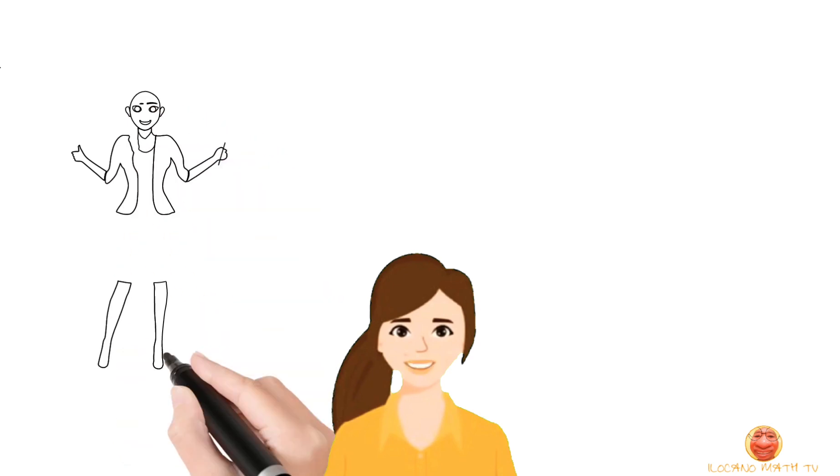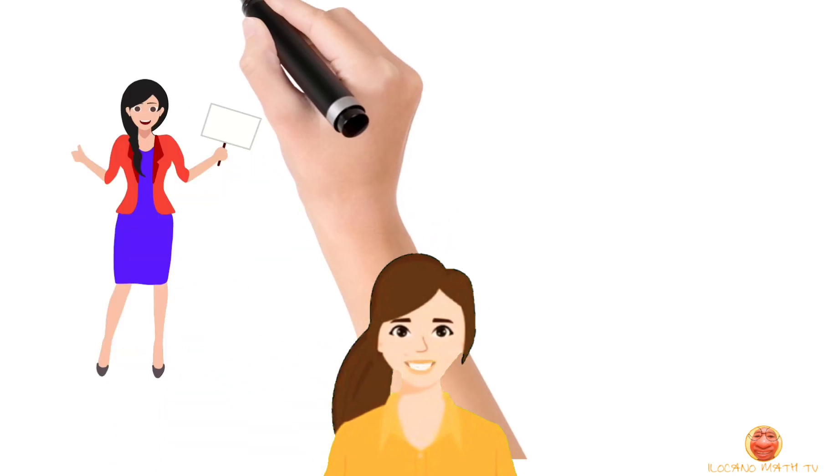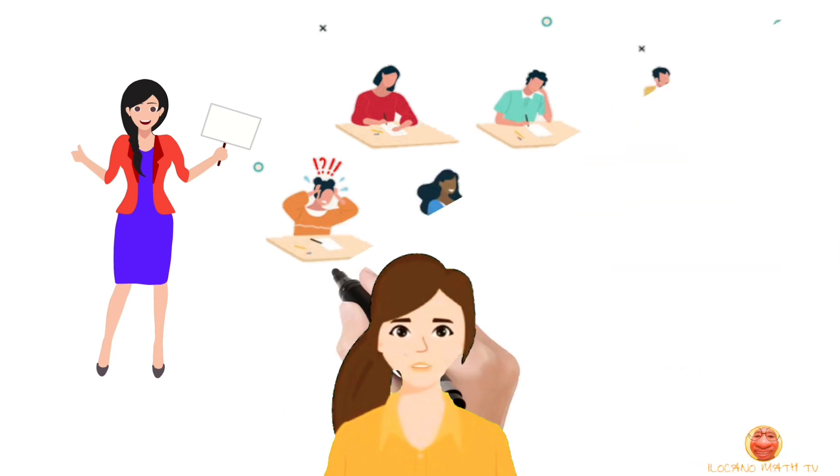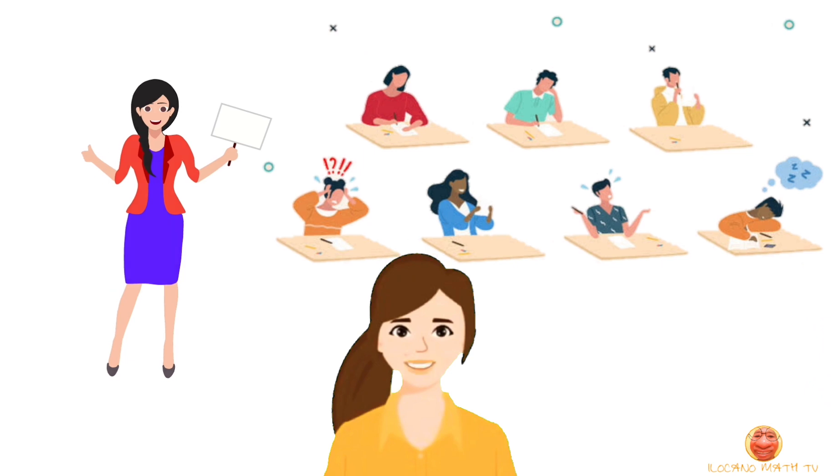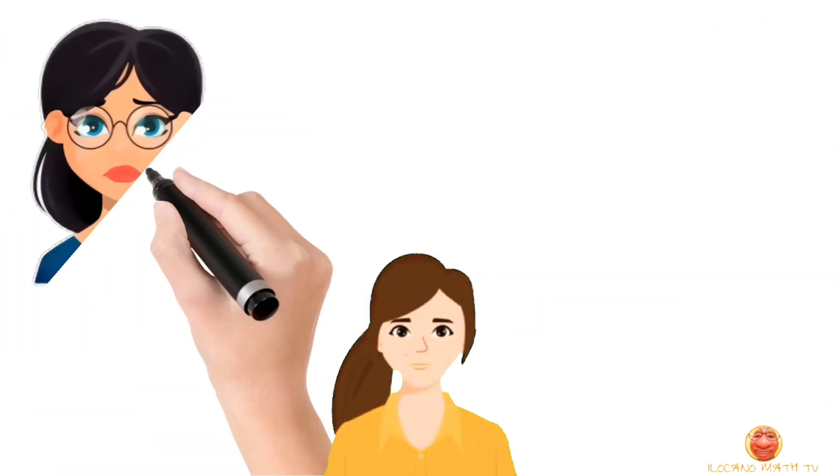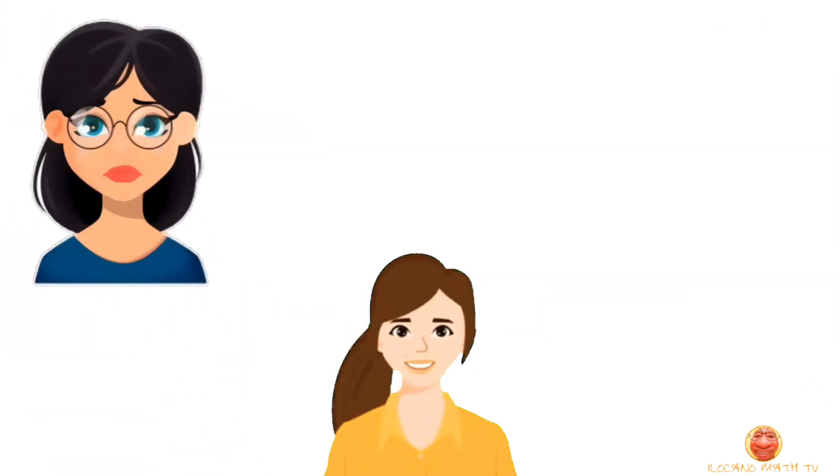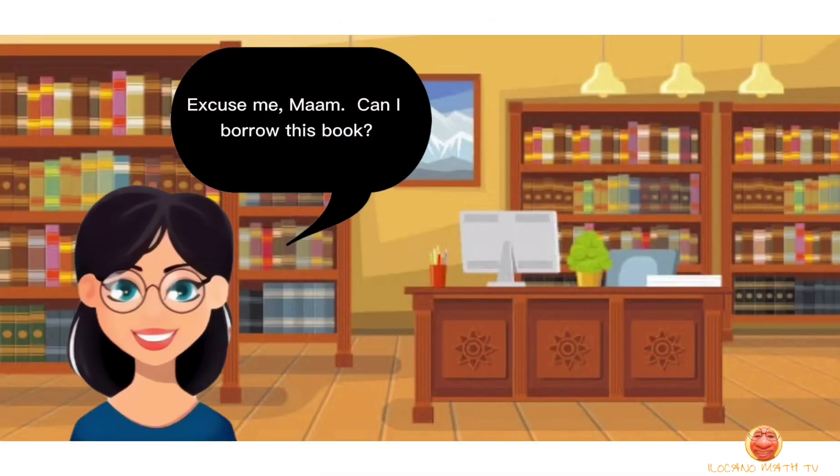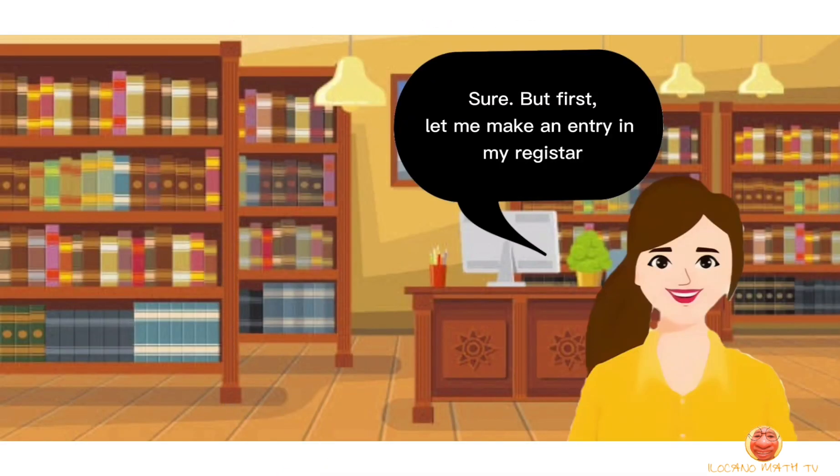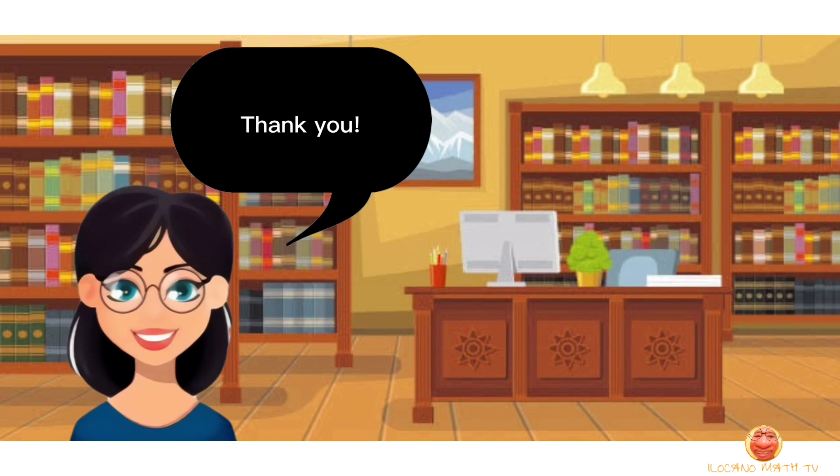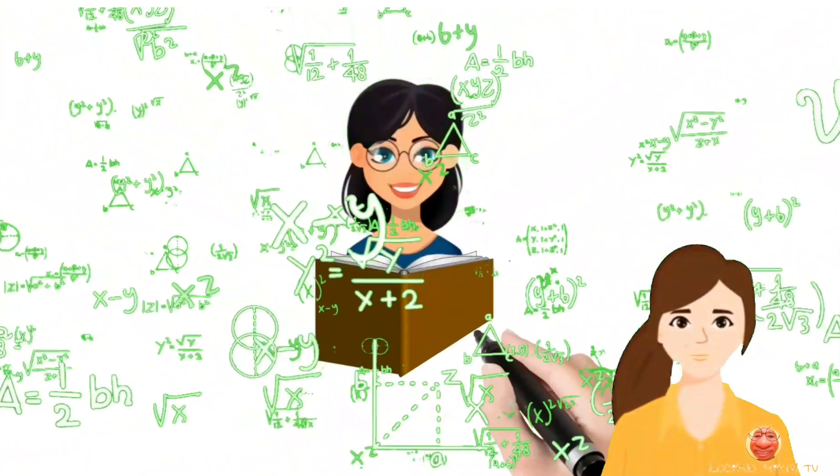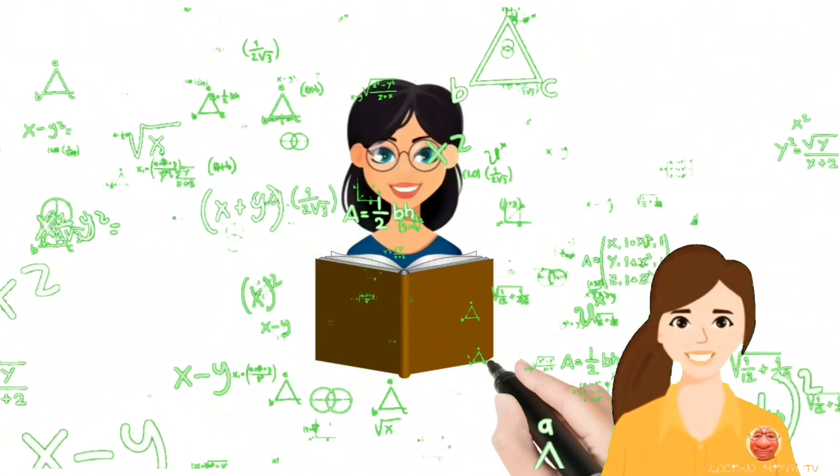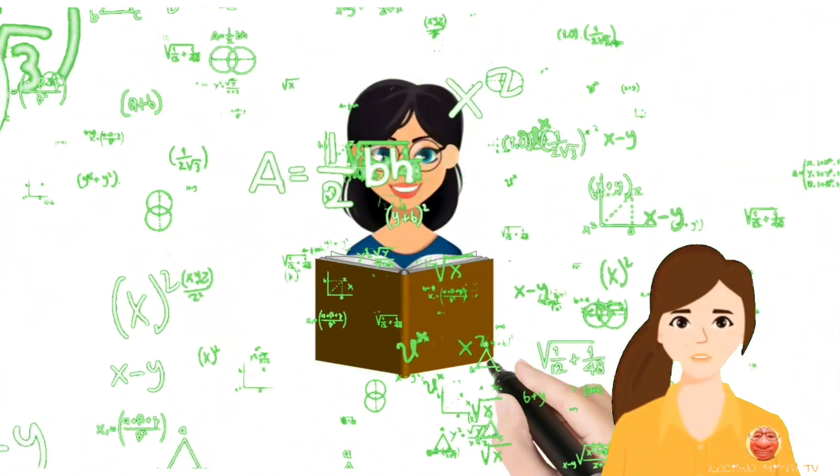One day, a class had a quiz about the correlation and regression. The teacher announced the scores. Half of the class had high scores, while the other half did not pass the quiz. A grade-conscious kid named Jayla is really worried about her score, so she decided to go to the library to borrow a book about the topic to understand it well. She sat down and contemplated before proceeding to read and study about the correlation and regression.